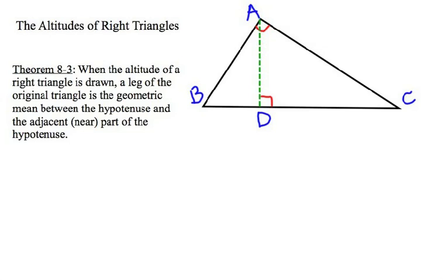Here's another example from Theorem 8-3. Now, this theorem says that any leg of the right triangle ABC is the geometric mean between the near part of the hypotenuse and the entire hypotenuse. So, let's go ahead and take a look and put some numbers in and see how this works on the other side.